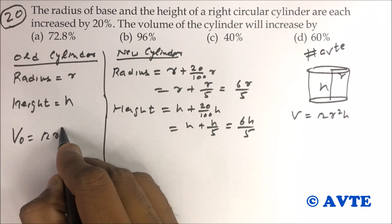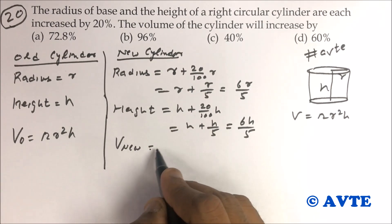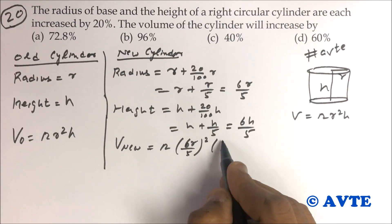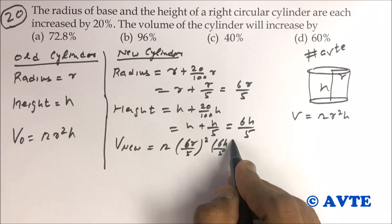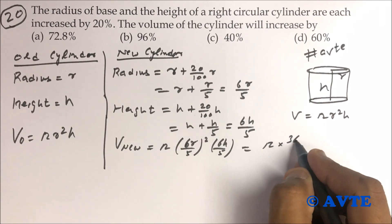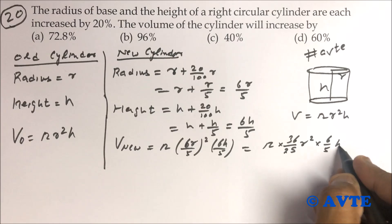That is 6h by 5. Guys, volume of old cylinder is pi r square h. The volume of new cylinder will be pi into 6r by 5 squared into 6h by 5.